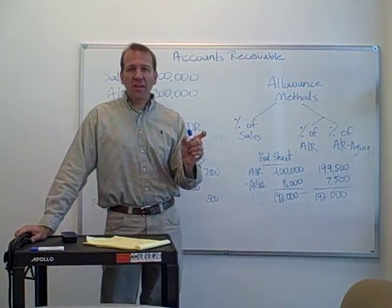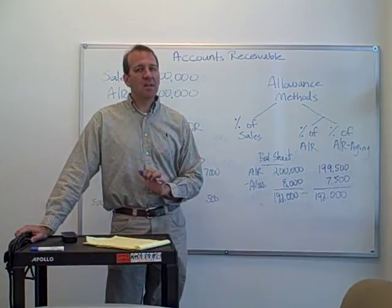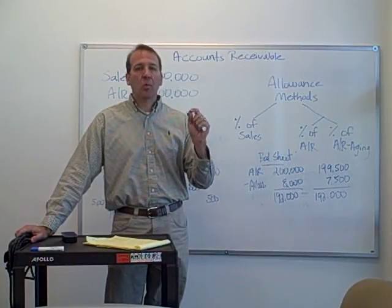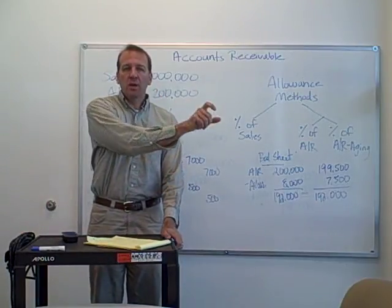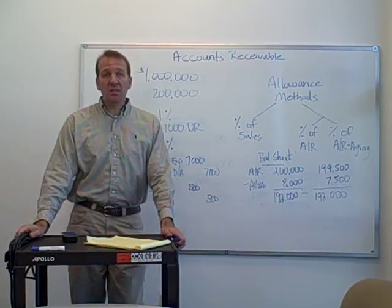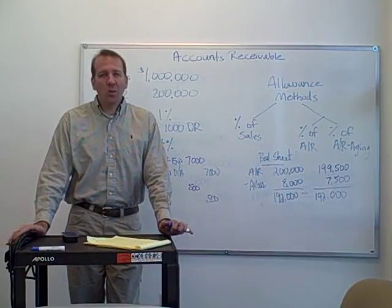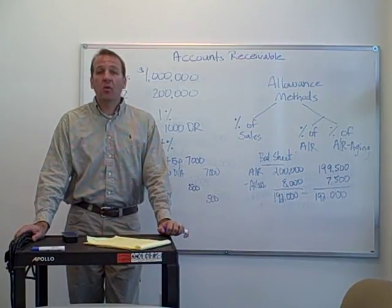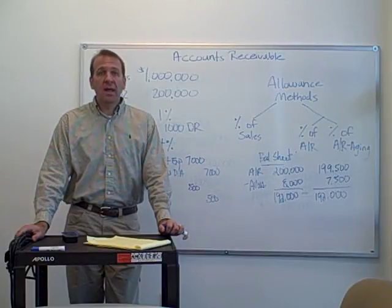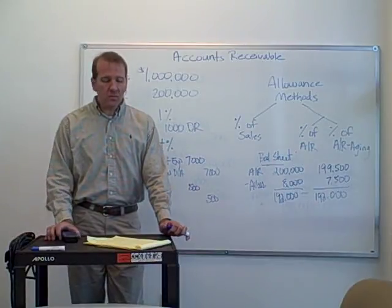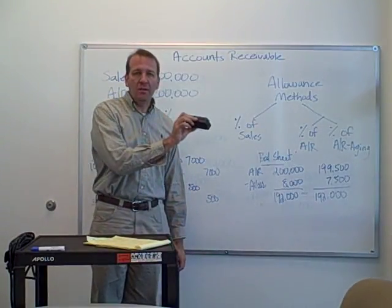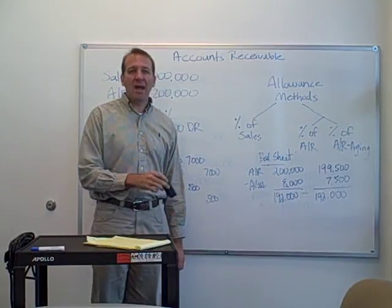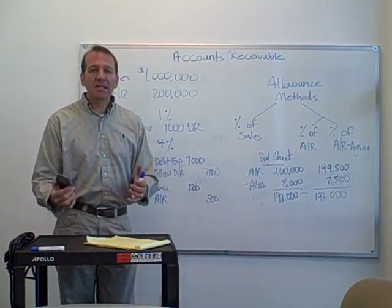Those 31 to 60 days late carry an even higher percentage — the later they get, the more likely they won't pay. You take each category and multiply it by its percentage. Those percentages are given to you in the homework and in the chapter examples. You multiply them by the corresponding balance in each category and add them all together.